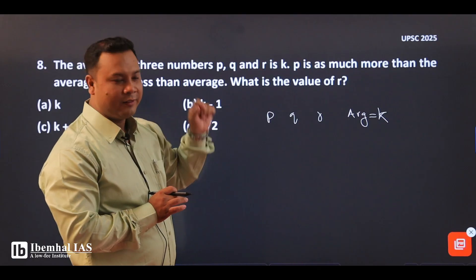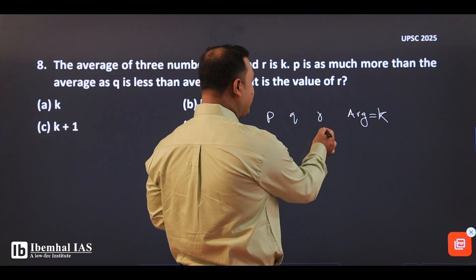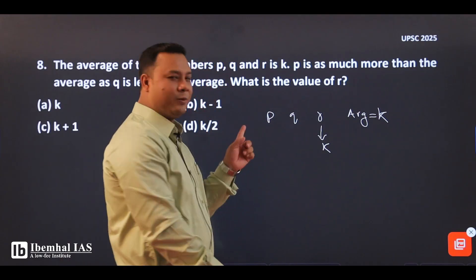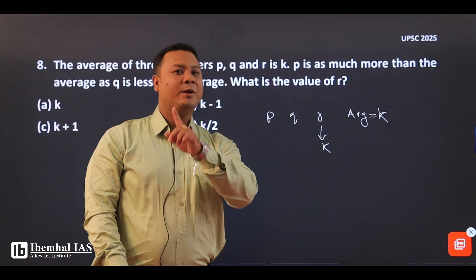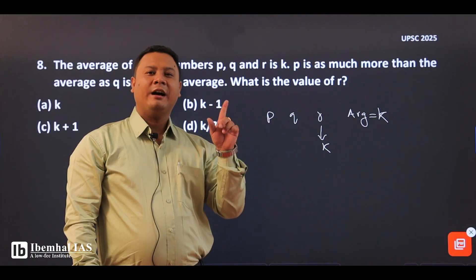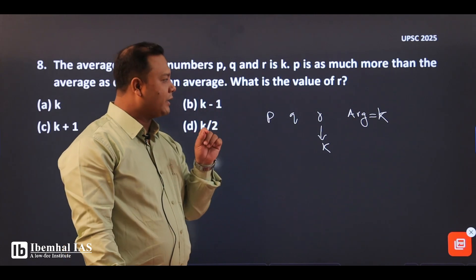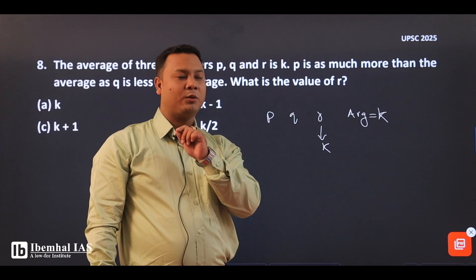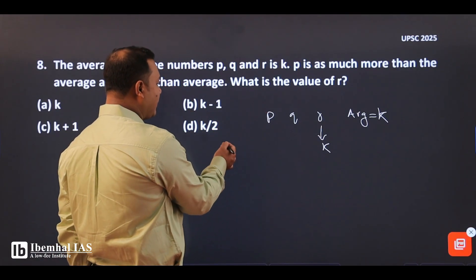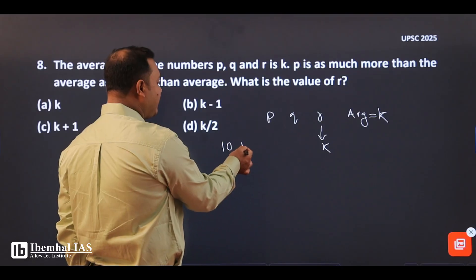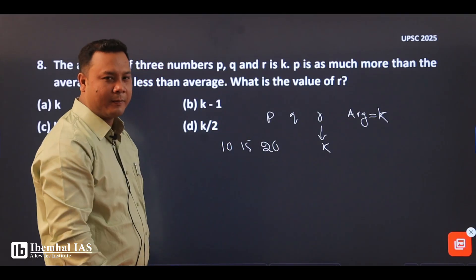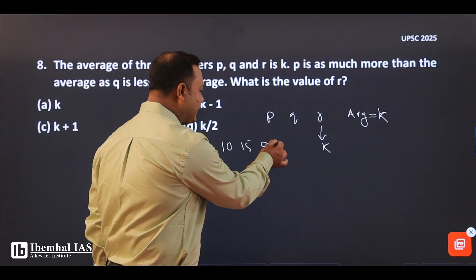That's K. The concept here: considering numbers PQR — for example, 10, 15, 20. I want to understand the average concept. You can consider this PQR with example values like 10, 15, 20 to verify. The average remains the same regardless of how high the individual numbers are.